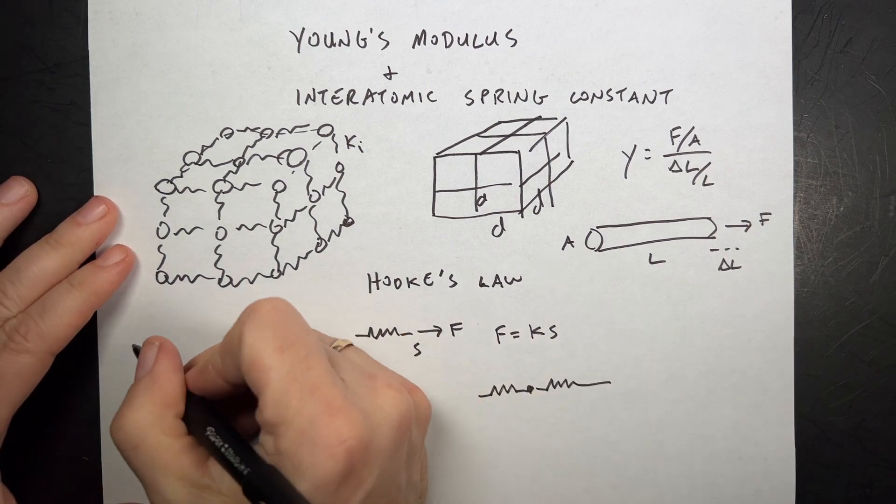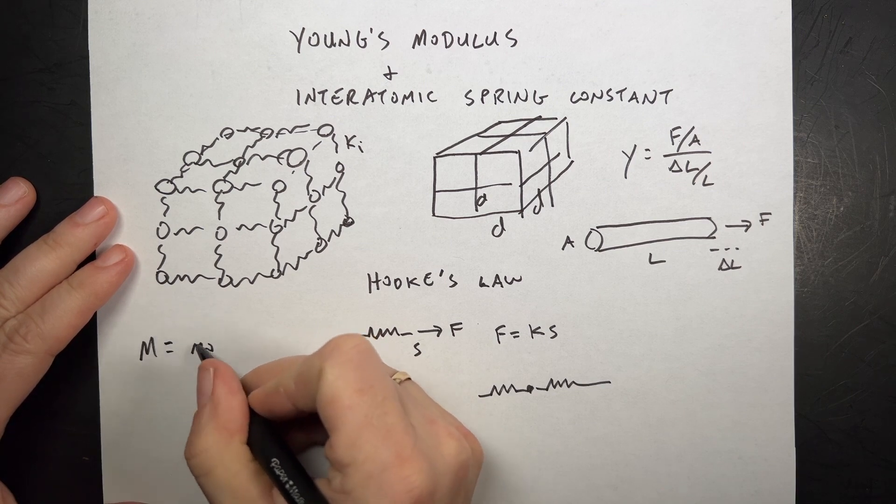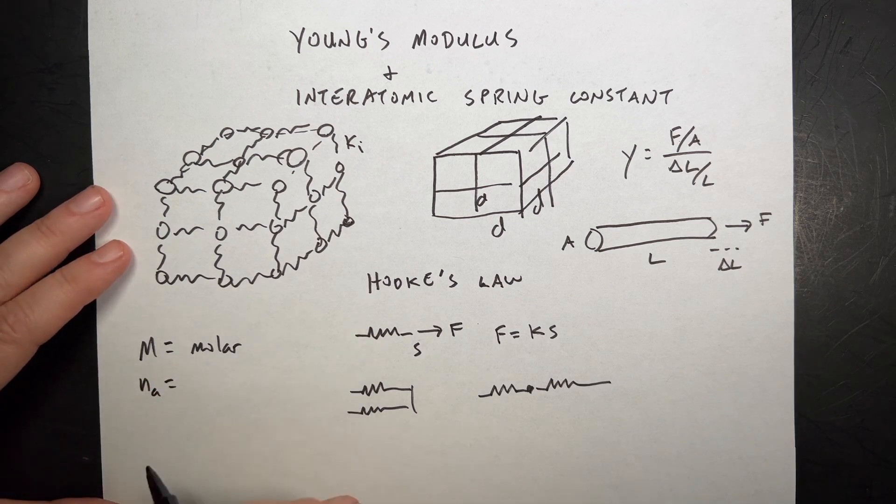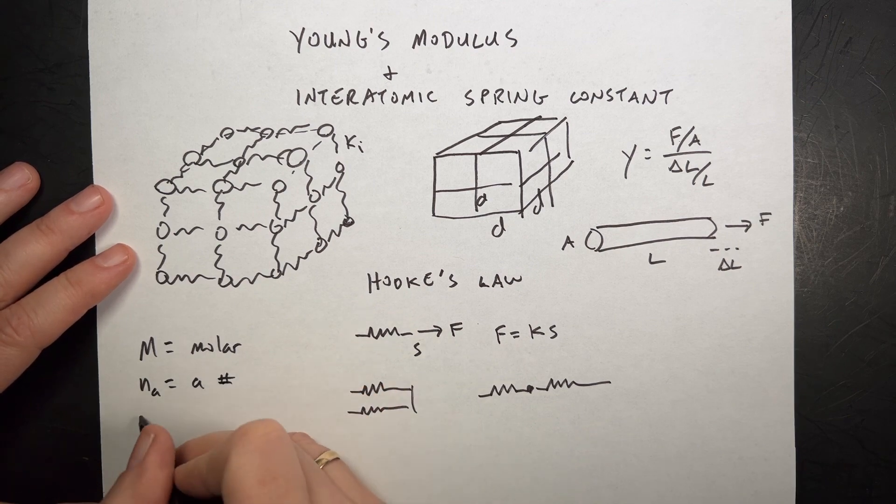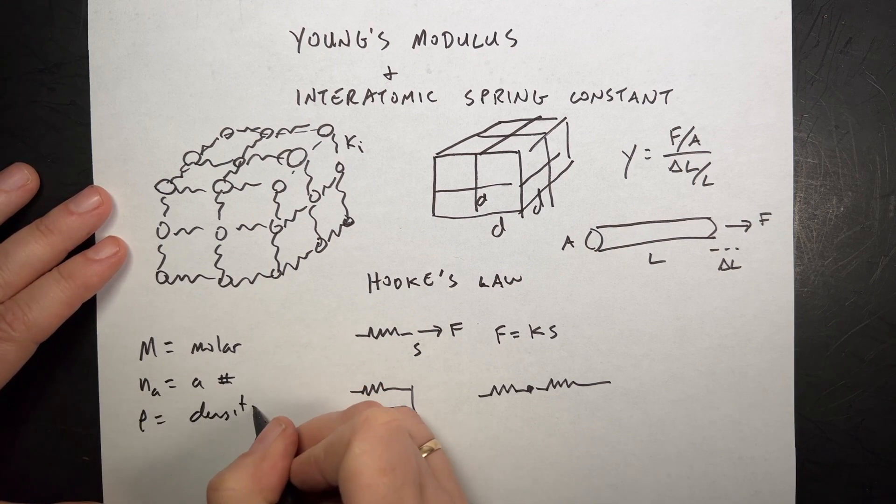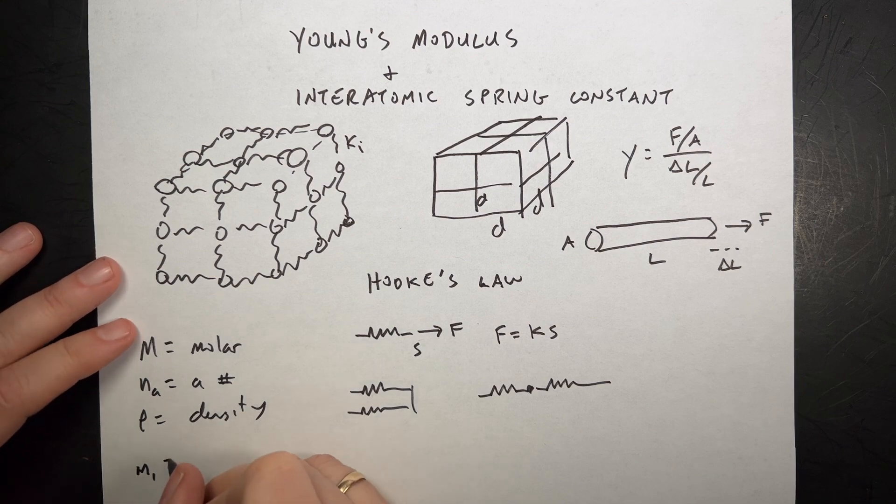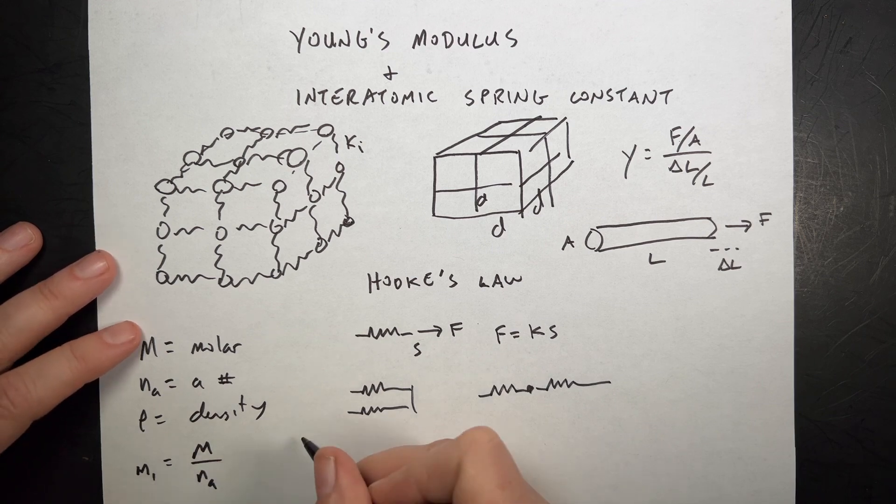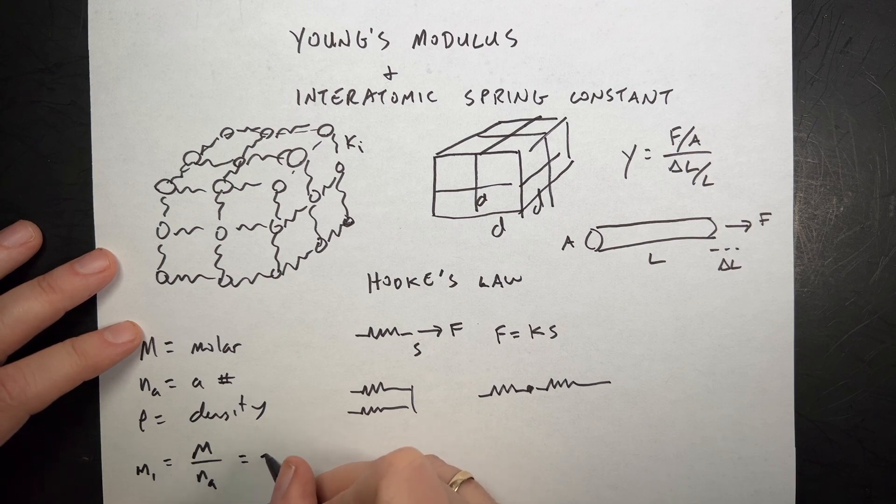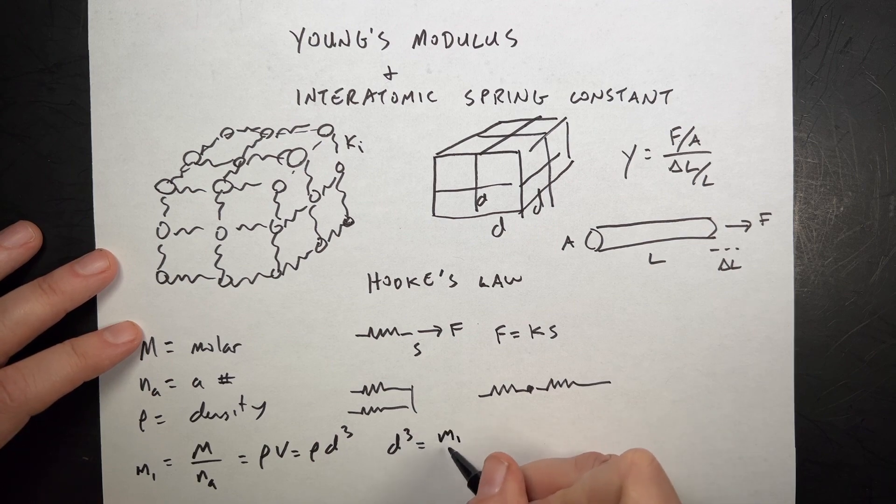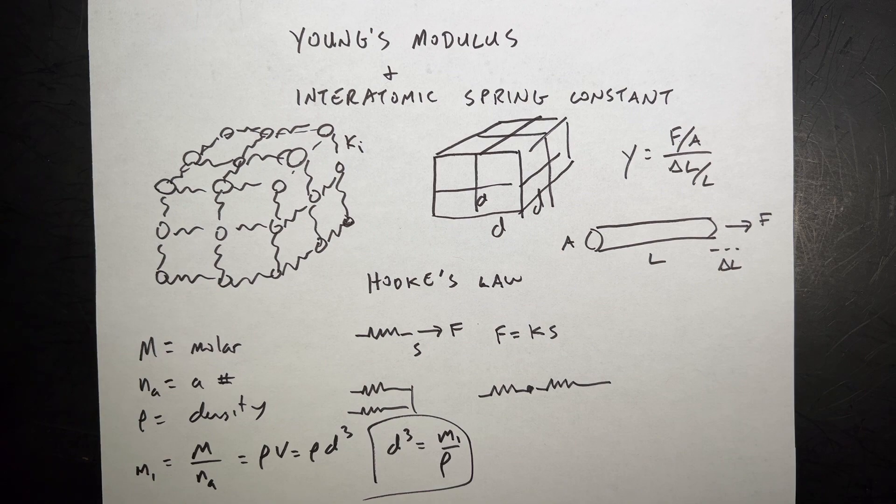How can you find that? Well, if I know the molar mass of something, capital M is the molar mass, the mass per mole, and I know Avogadro's number N_A, and I know the density rho, then I can find the volume of this, right? So, I know the mass of one atom, M_1. One atom is going to be the molar mass, which is the mass for a mole, M, divided by the number of atoms in a mole. And I can say that is equal to the density times the volume. So, the volume, which is d cubed, rho d cubed. So, d cubed is the mass of one atom over rho, and then you can find that d. Okay, so that comes up sometimes.